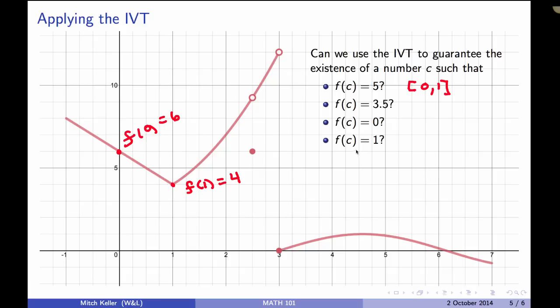Now, if we picked a different interval, if we picked the interval [0,2], that doesn't help for that one, because what we would need, then, is we're saying at 0, we're at 6, and at 2, we're at 7. So that would tell us there's a point where the function takes on every value between 6 and 7, but 5 isn't between 6 and 7.